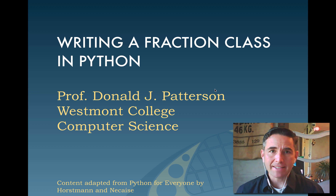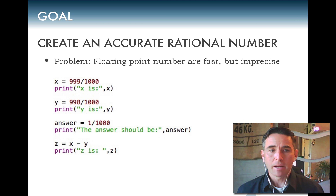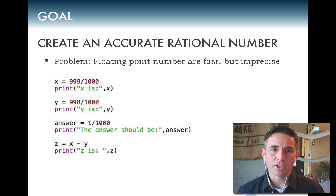What we're trying to accomplish is a class that can help us represent a rational number accurately. Floating point numbers — the way we usually track decimal numbers in Python — are fast but can be imprecise. For example, we set up a variable X equal to 999 divided by 1000 and print it out, then Y as 998 divided by 1000.